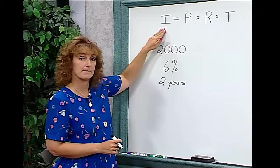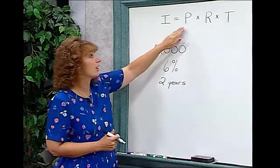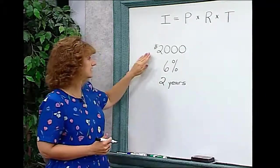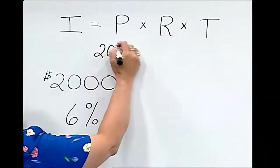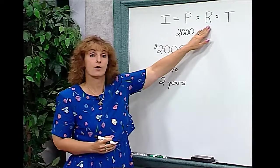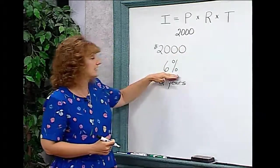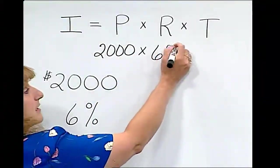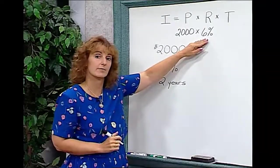Interest in this case is the amount of money the bank pays you for keeping the money in their bank. Principal is how much money you put into the bank. In this example, we've put $2,000 into the bank, so our principal is $2,000. The rate of interest is how much money the bank is going to pay you for leaving that money there.